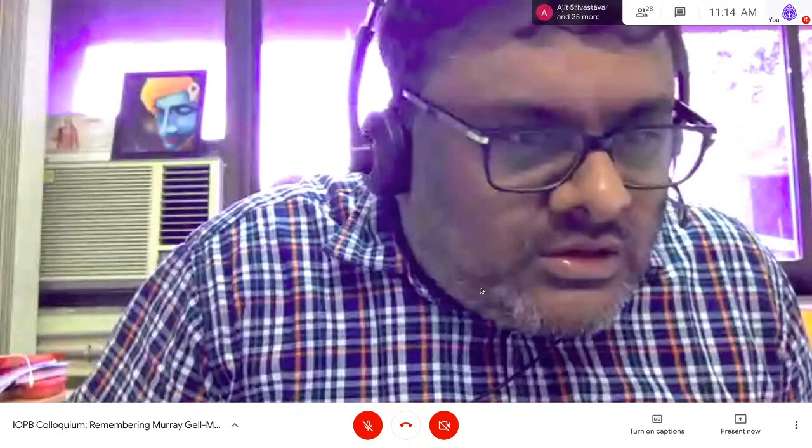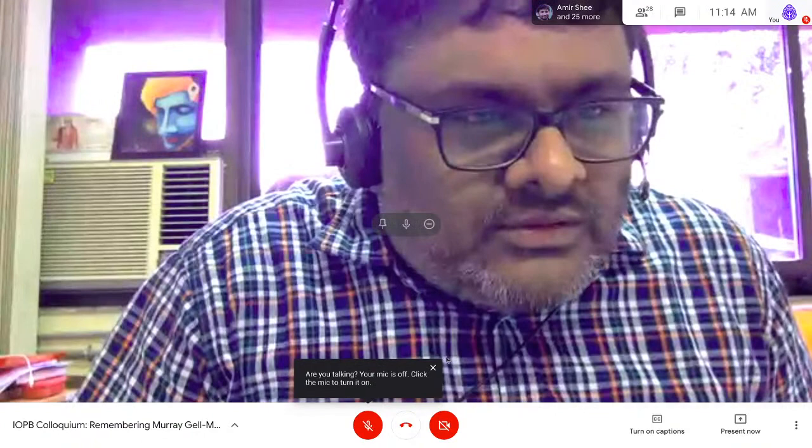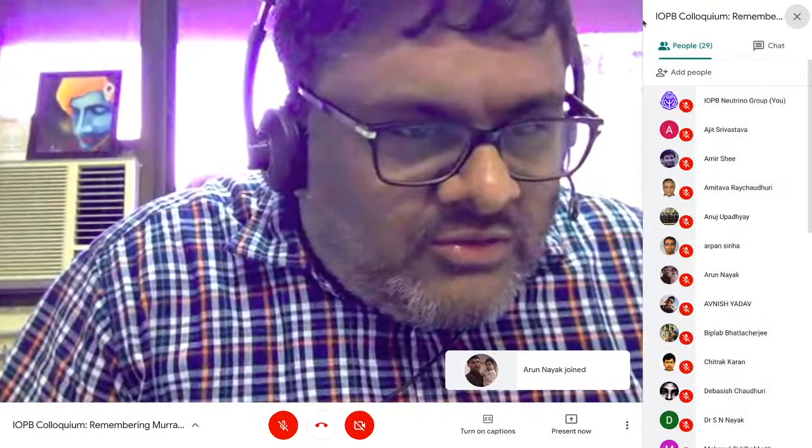He was actually born in a family of Jewish immigrants, originally from Ukraine. The original name of the family was Helmon. Now let me show you something - can you see this writing? This is Helmon. Note that the first letter is capital Gamma in the Greek alphabet, but this is in the Cyrillic alphabet.